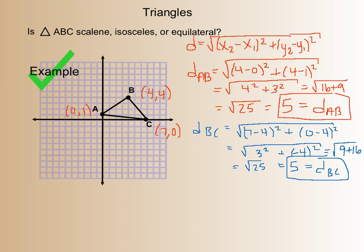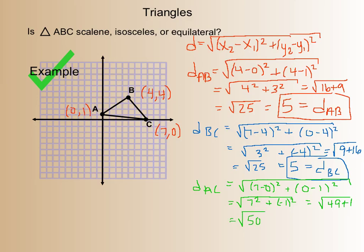And then the last side that I need to find is distance from A to C. I get 7 minus 0 squared plus 0 minus 1 squared, which is 7 squared plus negative 1 squared, which is 49 plus 1. So square root of 50, I can simplify that. 50 is the same as 25 times 2. And I know that the square root of 25 is 5. So my answer is going to be 5 square root 2. And that's the distance of A, C.